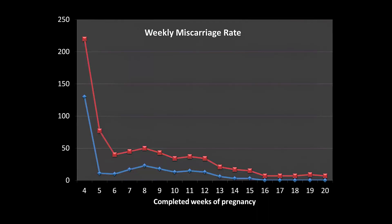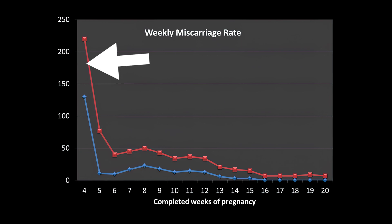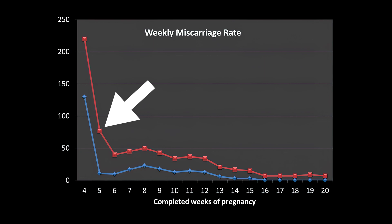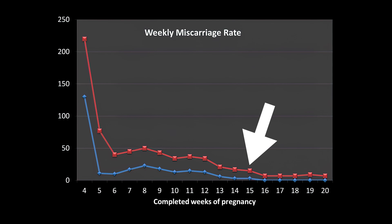You can notice a few things right away about this graph. The rate of miscarriage is much higher earlier in pregnancy than it is later in pregnancy. For example, during the fourth week of pregnancy, we would expect somewhere between 130 and 220 people would miscarry out of every 1,000 pregnancies. During the fifth week, the number of miscarriages is between 11 and 77 per 1,000. By the 15th week, it is between 3 and 15 per 1,000 pregnancies.